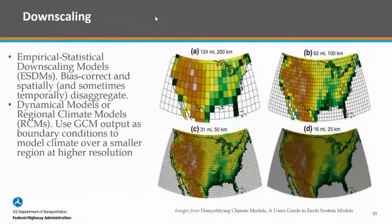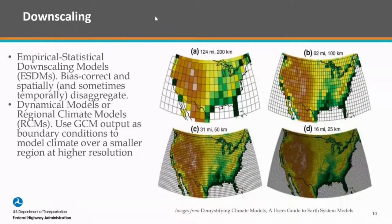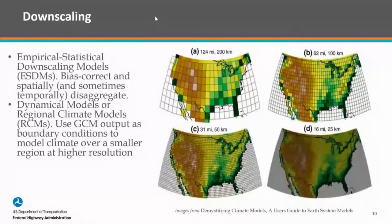Dynamical downscaling — which we won't focus on here — is when you essentially just run a more refined model. You have your global model, then focus on just the U.S. with higher resolution. That area is not quite as refined as the statistical downscaling methods yet, and that's why FHWA has focused on using statistical data at this time. Our tool only supports statistical models, and specifically it supports one called the LOCA downscaling.